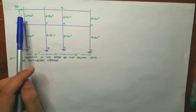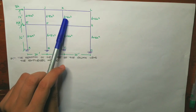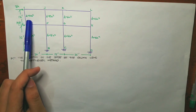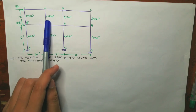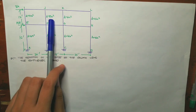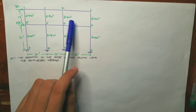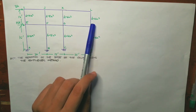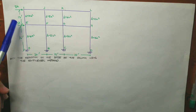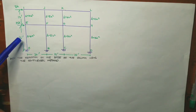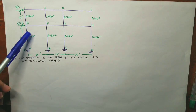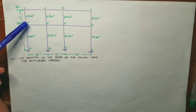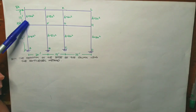The given cross-sectional areas for each column are: IE is 10 inches squared, JF is 8 inches squared, KG is 6 inches squared, and LH is 10 inches squared. The columns below have the same cross-sectional area as the corresponding columns above.